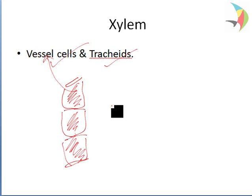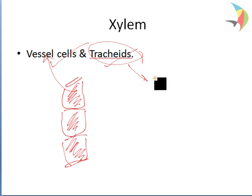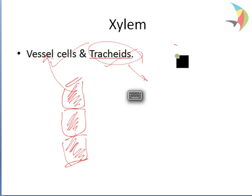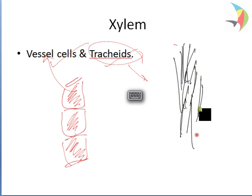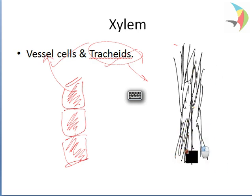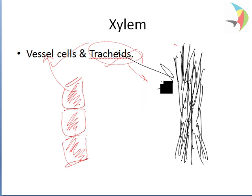Tracheid cells in the xylem are elongated and spindle-shaped, and they are more of dead cells. They are elongated dead cells working in combination with vessels. Vessels are more active, while tracheids are the dead part. Both xylem vessels and tracheids are non-living and conducting tissues.